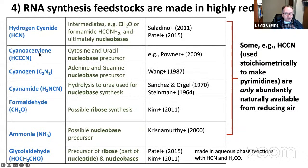HCN — hydrogen cyanide — is a precursor for nucleobases, and cyanoacetylene is used in prebiotic schemes to make pyrimidines. There is no source as plausible and certain as a highly reducing atmosphere, which motivates us to think about Miller-Urey-type atmospheres.